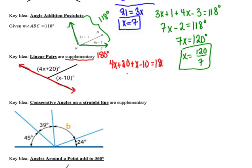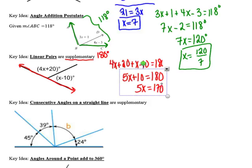Combining terms gives 5x plus 10 equals 180. Subtracting 10 from both sides gives 5x equals 170, and dividing by 5 gives x equals 34.